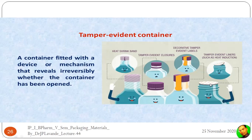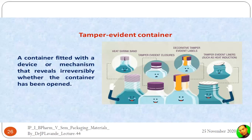These are the tamper evident containers. A tamper evident container is one fitted with a device or mechanism that irreversibly reveals whether the container has been opened. Once opened, the process is totally irreversible — it cannot be reverted back or resealed.